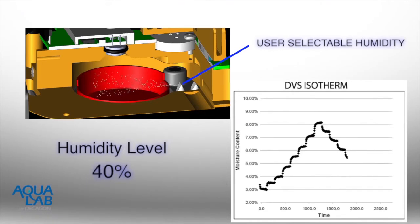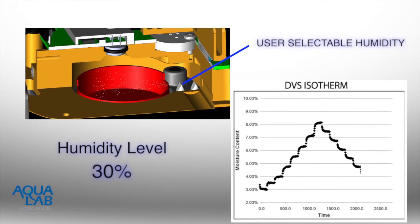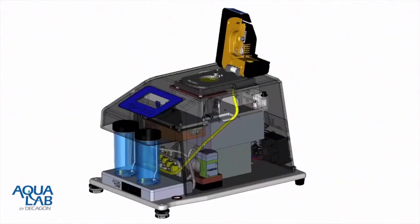The Aqualab VSA can produce DVS isotherms that are equivalent to those produced by any existing vapor sorption analyzer, but it can also use the DDI method. The DDI method is a truly dynamic method and produces dynamic isotherms.